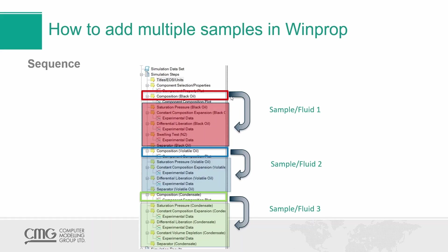The red section is an example of a black oil with its composition, and all the calculations in that block are associated with that composition. The blue section is associated with the composition of a volatile oil, and the last one at the bottom is associated with the composition of a condensate. The order in which you define your compositions and experiments is very important when working with multiple samples. Now that we have a base, let's start doing some practical examples.